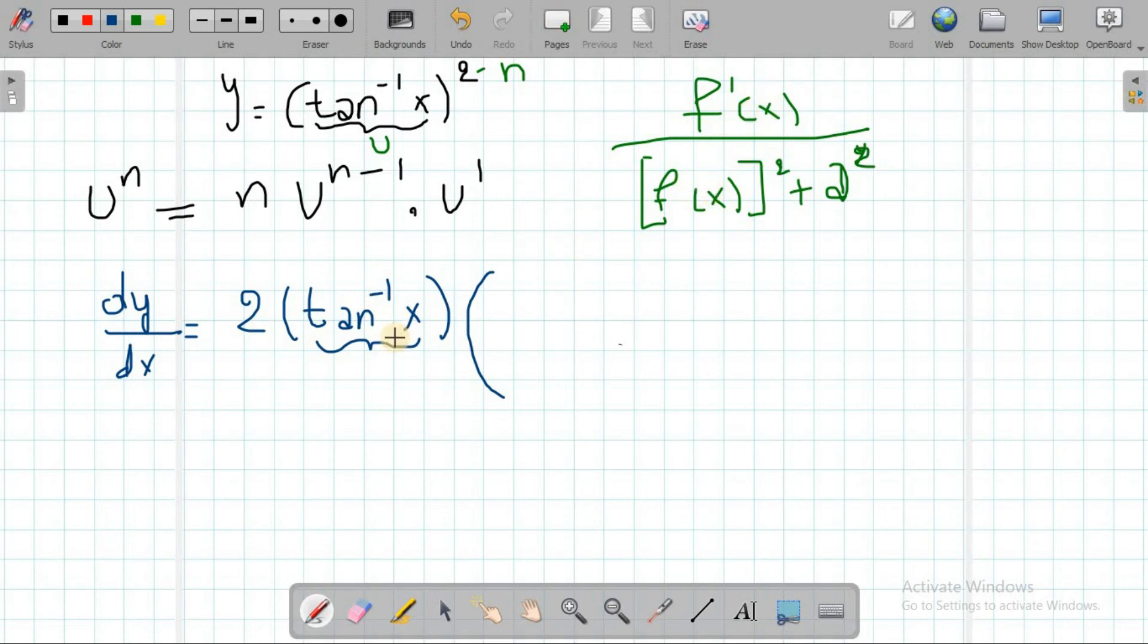2 tan minus 1 x and u prime. So the derivative of this one, when I say f prime in this case, my f(x) is x. This x is my f(x). We don't have a, it's going to be equal to 1. It's equal to 1.